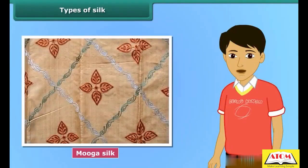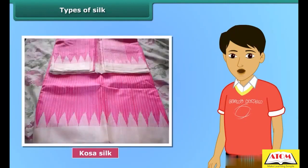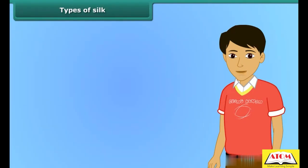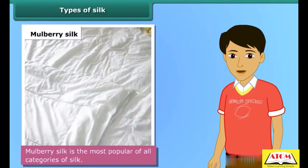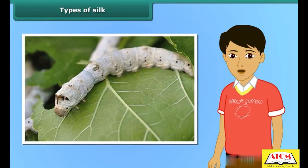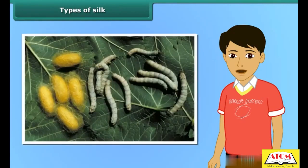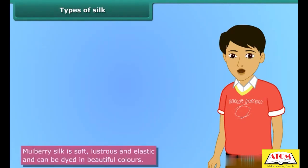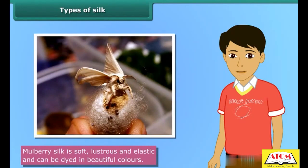Tassar silk, Moonga silk, and Kosa silk are different varieties of silk obtained from cocoons spun by different types of moths. Mulberry silk is the most popular of all categories and is produced by the mulberry silk moth, which feeds entirely on the leaves of the mulberry plant. These moths are reared indoors and are completely domesticated. Most commercial silk is mulberry silk, which is soft, lustrous, elastic, and can be dyed in beautiful colors.